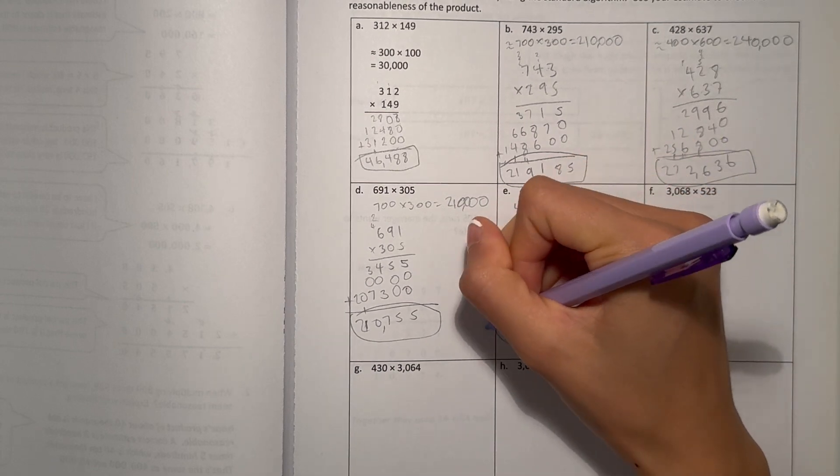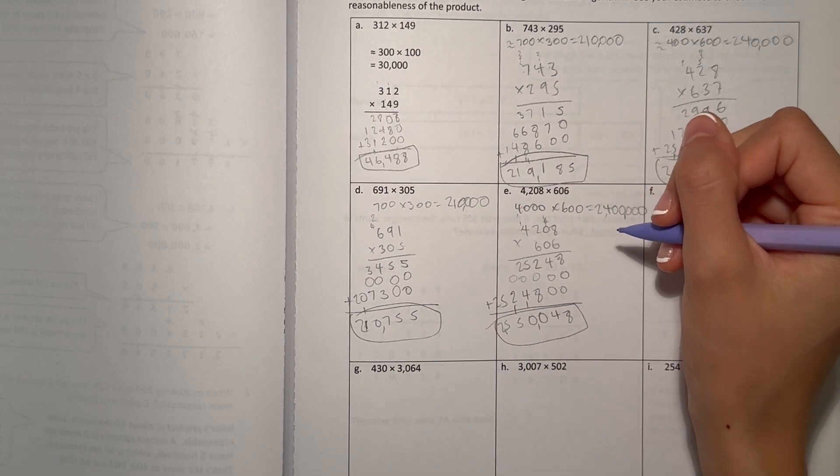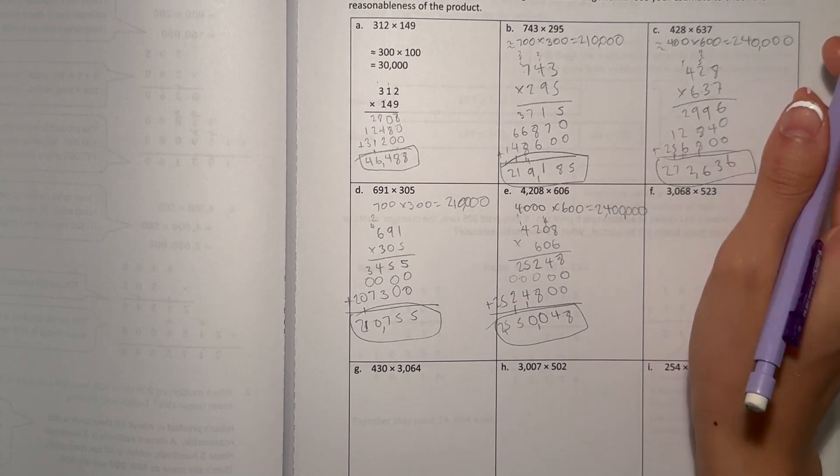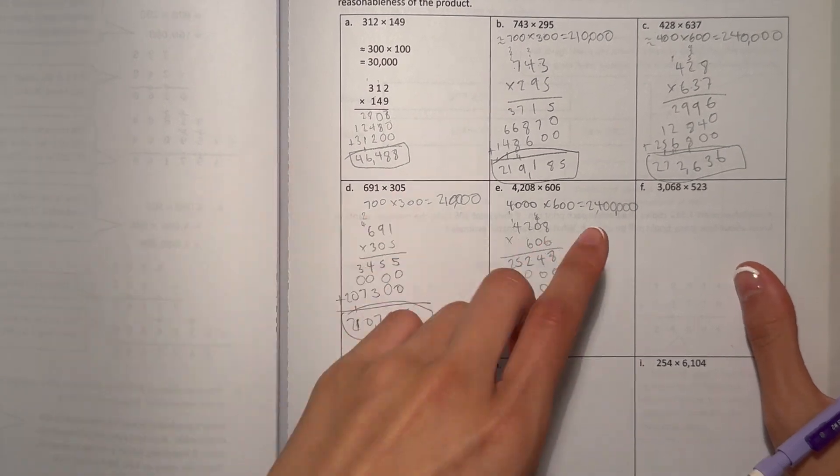So I'd say our answer is reasonable because it's in the 2,000,000 range, kind of like our estimate.